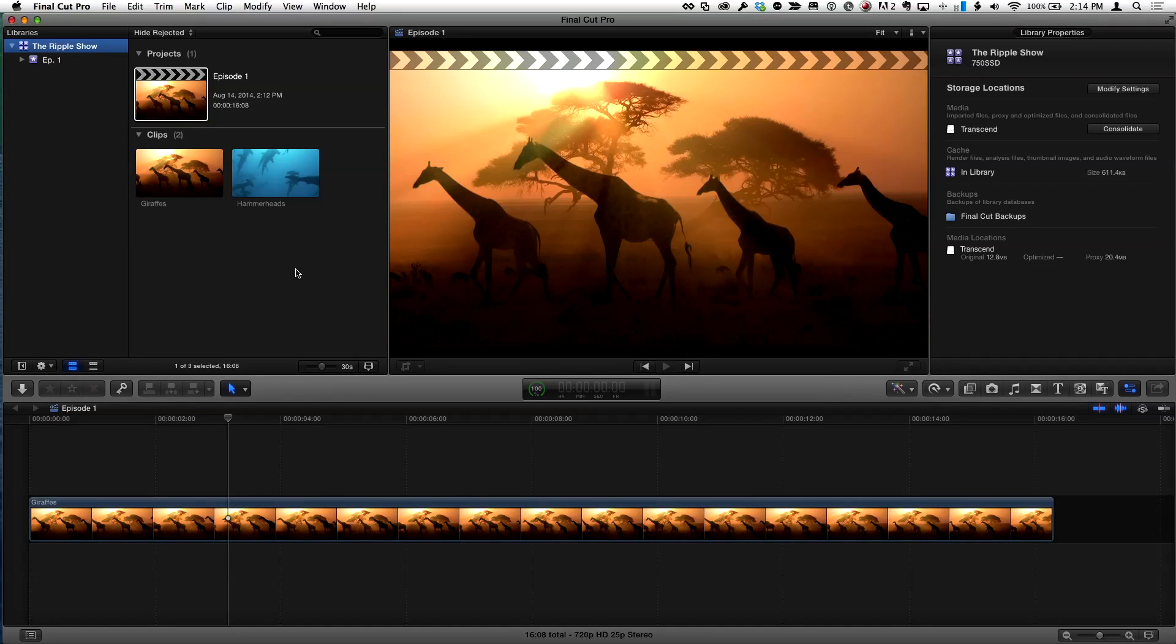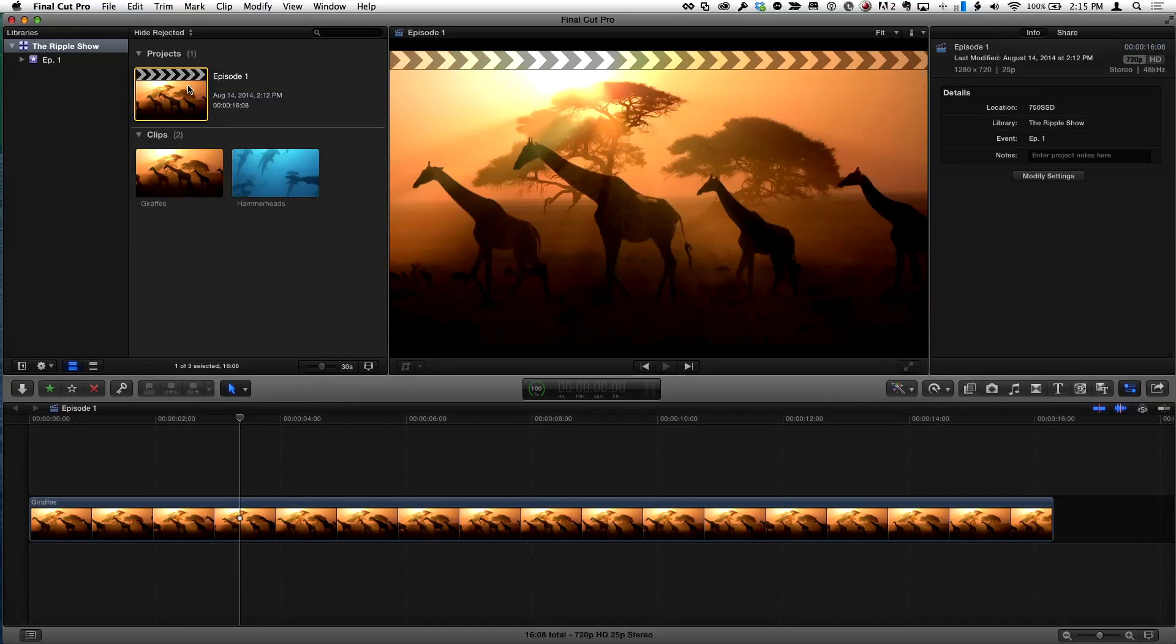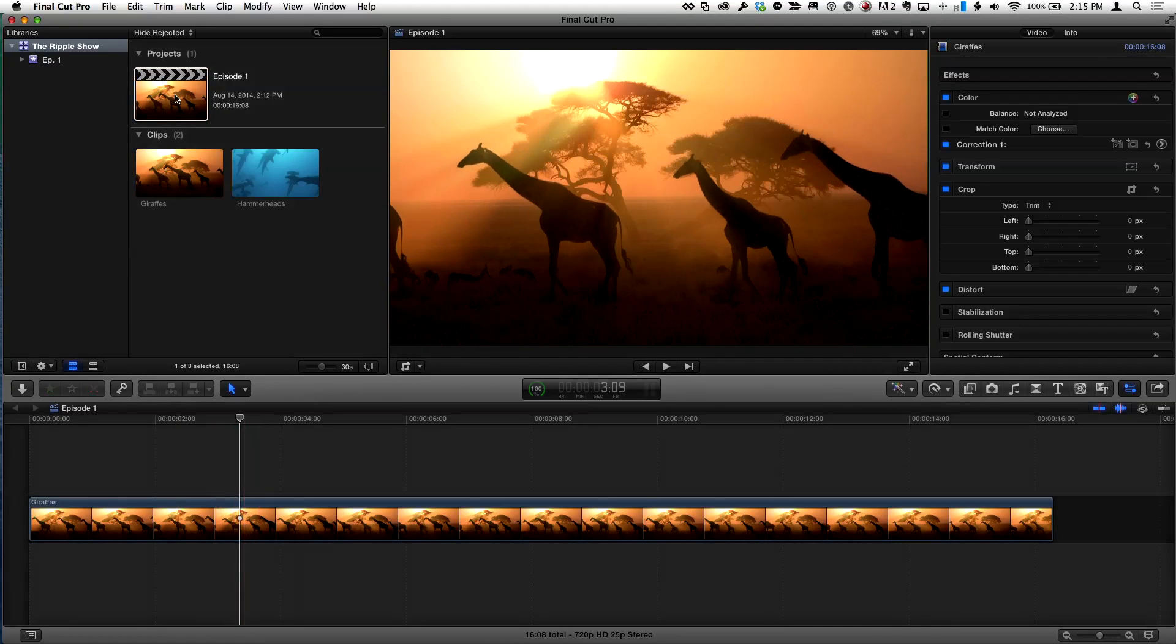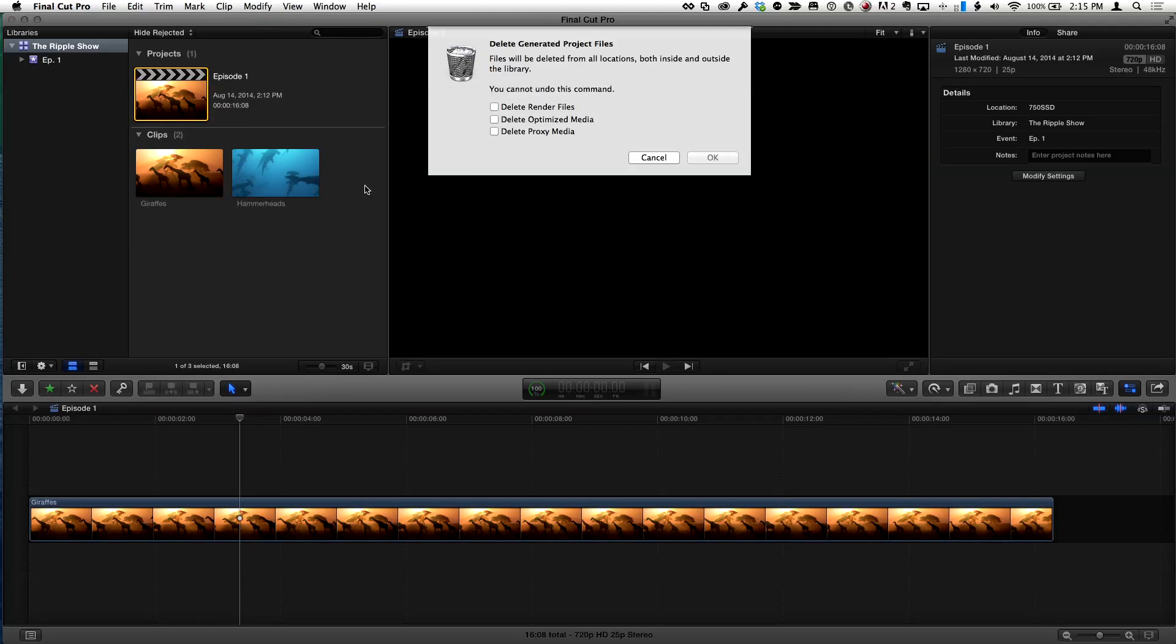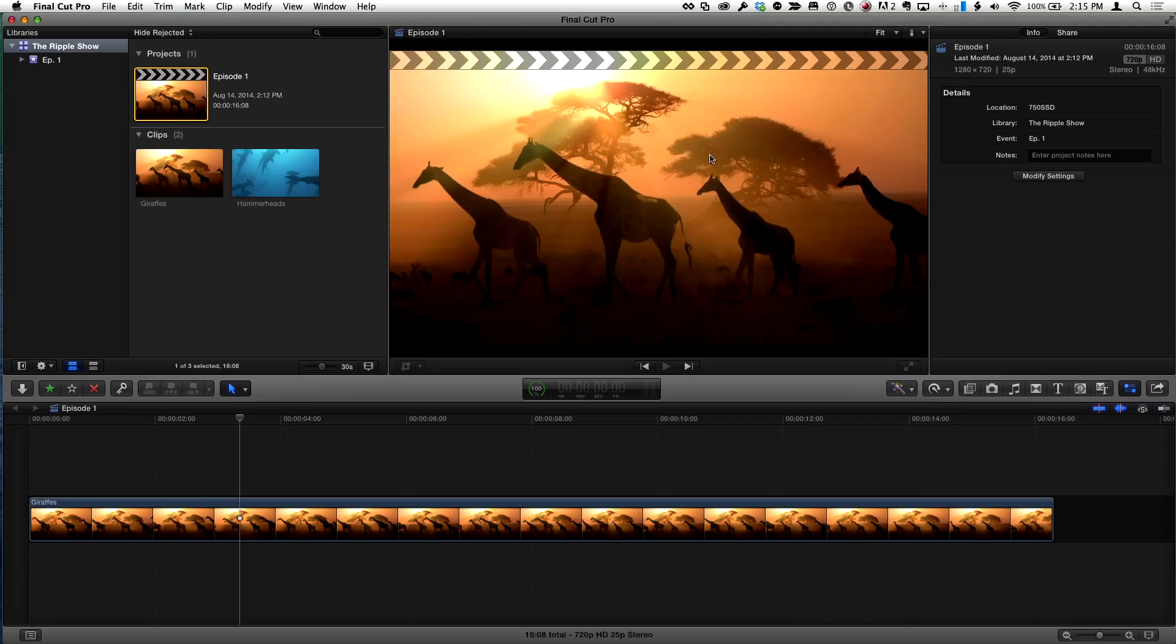The thing that's kind of cool is, if you just need the proxy media for a project, not the entire library, like oh my god I've got a library with thousands of clips, I don't want to have to regenerate all that proxy media. If all you're interested in is this particular edit you're working on, check this out: for this particular project I just have one of the two clips in it. I'm going to go to the file menu and choose delete generated project files for just that project. I'll delete proxy media and it will only delete that one clip that's on that RAID.